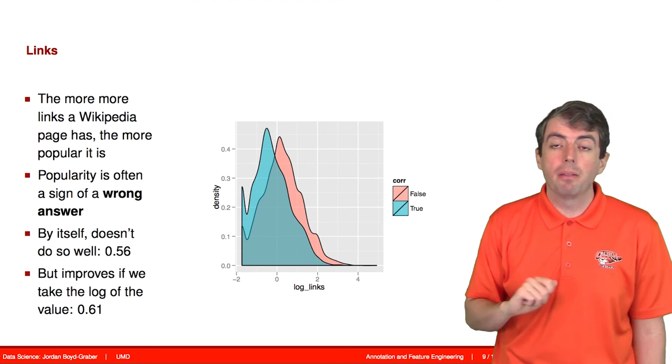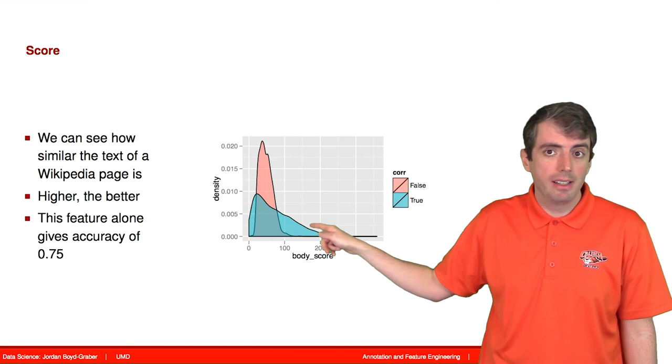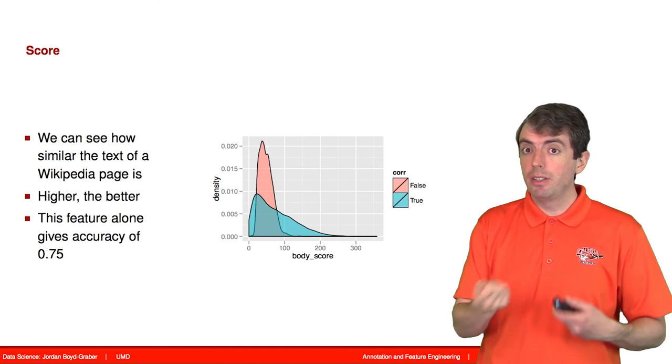So one thing that I said really early on is a very useful feature is just the score of the information retrieval system. And this is a really useful feature. And you would be crazy not to use this as a feature. And so by itself, it can get you over 70% accuracy. So you should definitely use this. Maybe you could even do more with it by combining it with specific features.